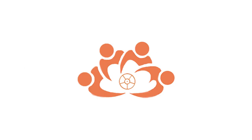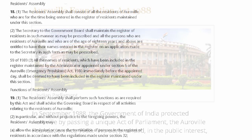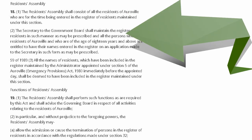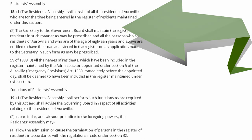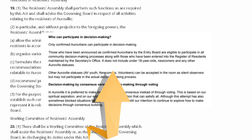What is the Auroville Residence Assembly? According to Section 18 of the Auroville Foundation Act, the Residence Assembly shall consist of all the residents of Auroville who are for the time being entered in the Register of Residence maintained under this section. On a separate note, residents with the status of confirmed Aurovilians can also participate in a Residence Assembly decision, as per an announcement made by the Working Committee on the 5th of April 2021 and the Interim RAD Policy of 2021.